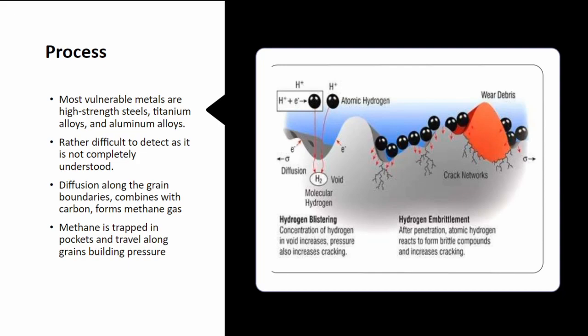But what happens is hydrogen diffuses along the grain boundaries and it combines with carbon forming methane gas. This methane gas will go down into these pockets along the grain boundaries, and these pockets will accumulate pressure and keep building. It's considered a failure rather than a corrosion because these pockets simply add more stress onto the material itself.